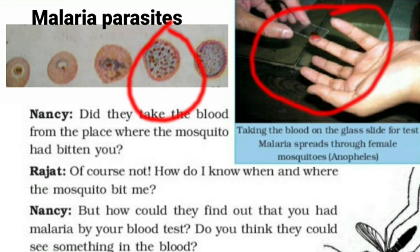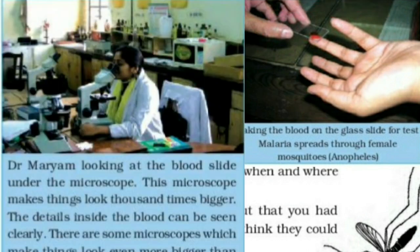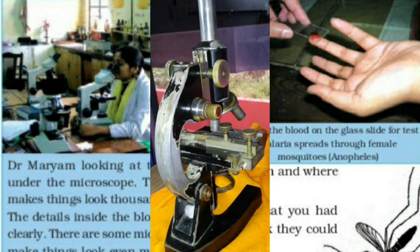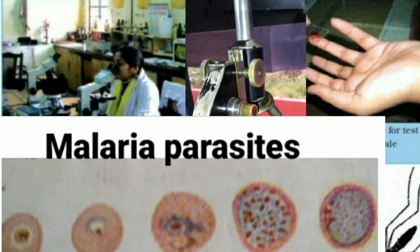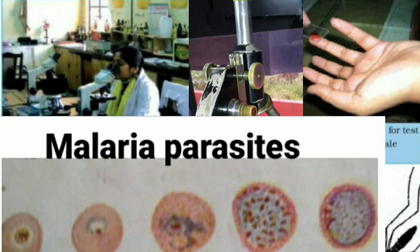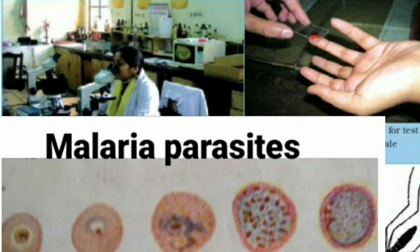For the blood test, blood is taken on a glass slide for testing. Dr. Mariam is shown looking at the blood slide under the microscope. This microscope makes things look thousands of times bigger, so the details inside the blood can be seen clearly. There are some microscopes which can magnify even more than this one.